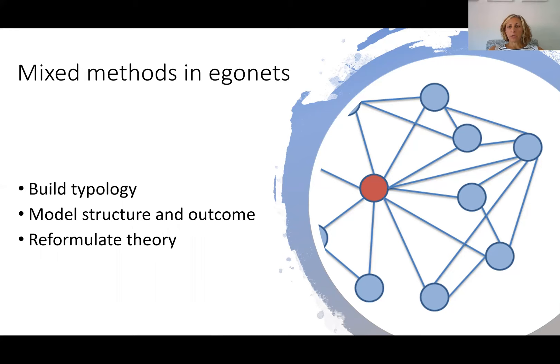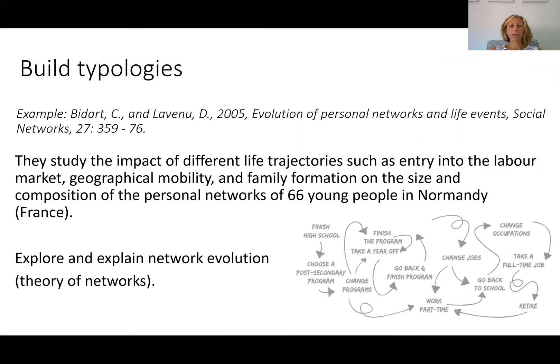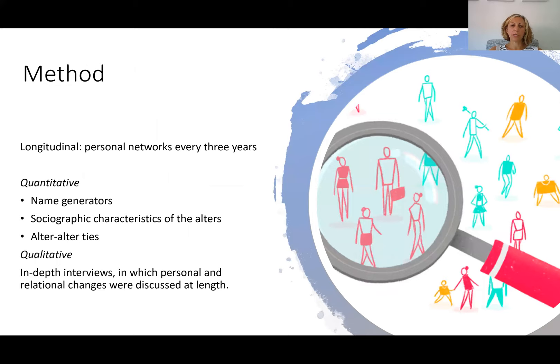The first example I'm going to use is the study of Claire Bidart and colleagues, where they were interested in how different life trajectories — for example, entering the labour market, geographical mobility, or formation of the family — impact the size and composition of personal networks of 66 young people in Normandy. They wanted to explore and explain how networks evolve, so we are within the framework of theory of networks. They interviewed these 66 young adults every three years, asked name generators and sociographic characteristics of alters and alter-alter ties, constituting the quantitative data collection.